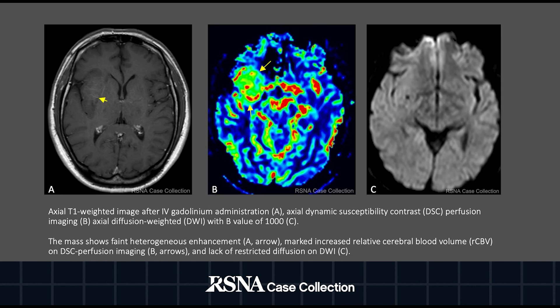On the T1 post-contrast sequence, the image to your far left shows faint linear enhancement within the mass. MR perfusion, the middle image, shows increased areas of high cerebral blood volume. The image to your far right is a DWI map, where we can see a mismatch between MR perfusion and DWI — the areas of high perfusion within the mass do not show restricted diffusion.